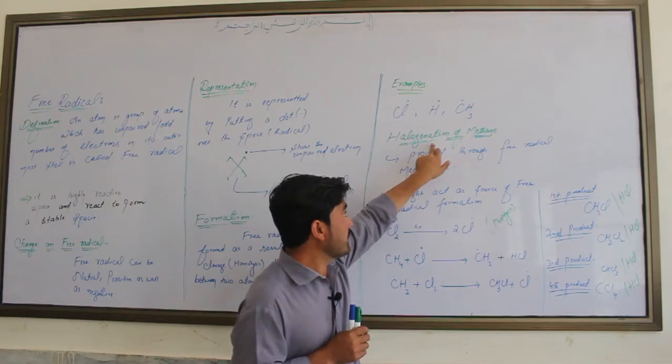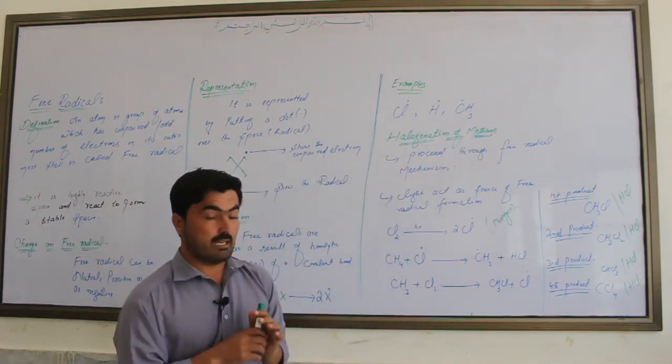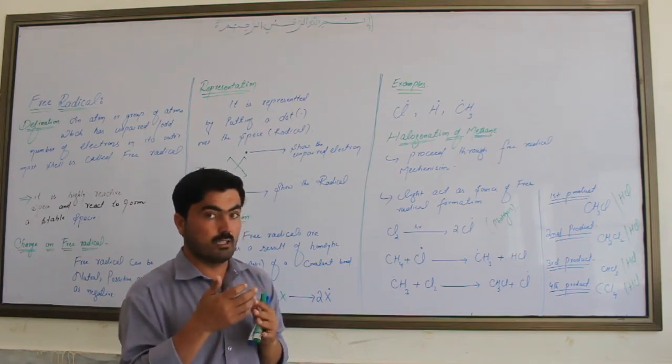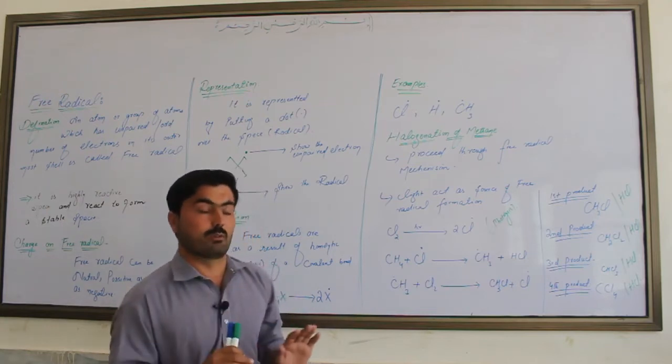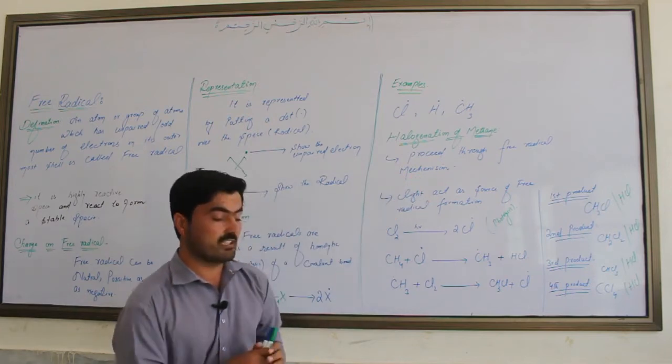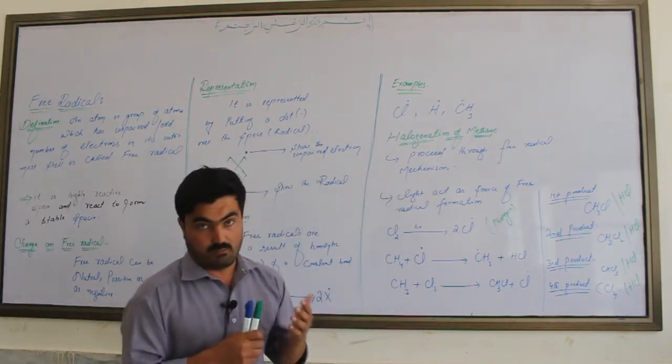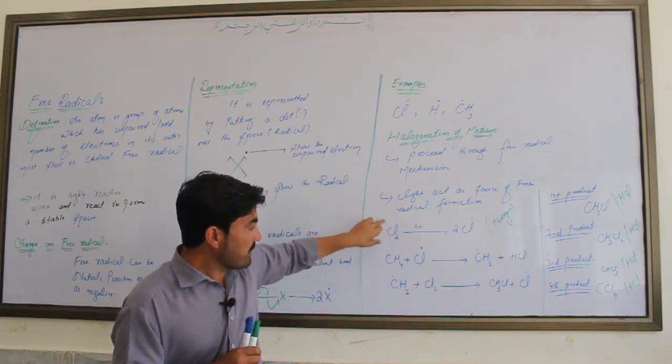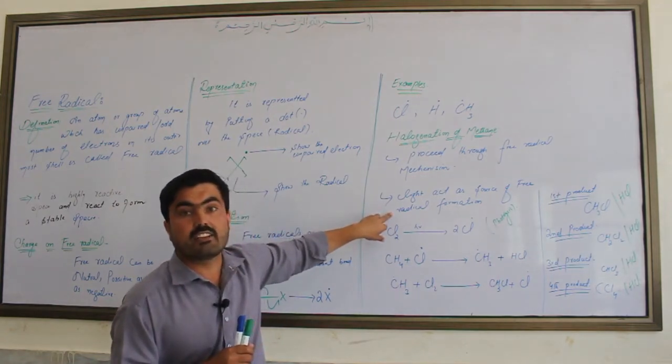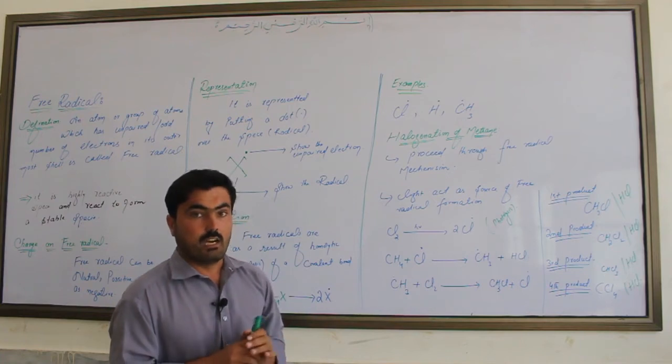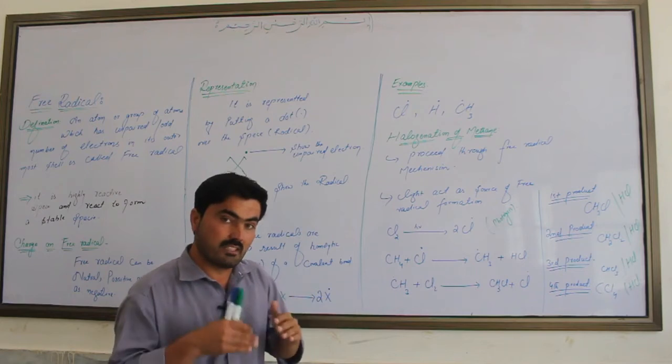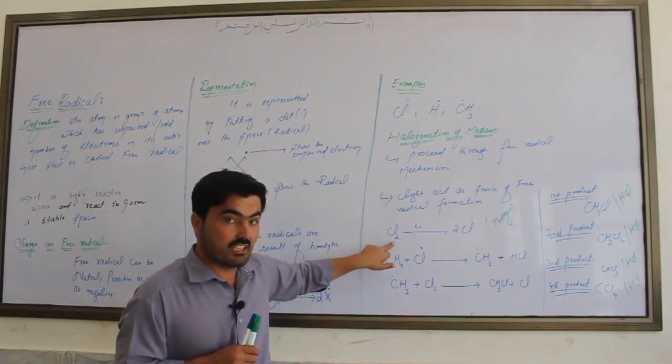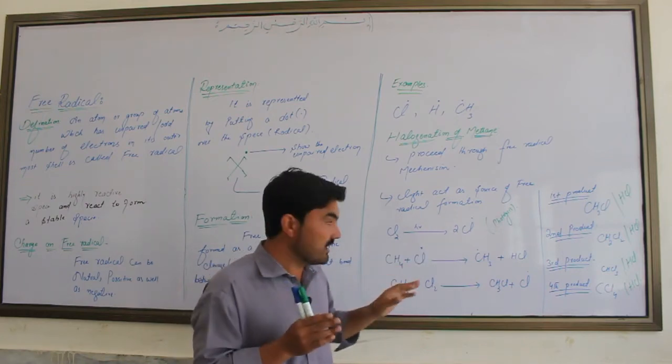Consider the reaction of chlorine with methane. The hydrogen in methane can be substituted by chlorine. This chemical reaction occurs through initiation: the stable chlorine molecule (Cl2) is hit by ultraviolet light, causing homolytic cleavage of the Cl-Cl bond to form chlorine radicals.